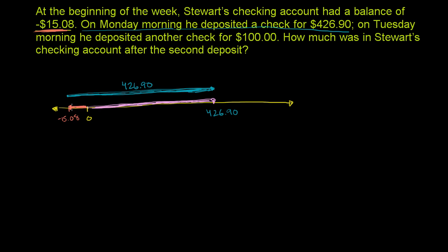The length of the orange arrow is just the absolute value — you can't have negative length — so it's just $15.08. That gives us $426.90 minus $15.08. Lining up the decimal points: 10 minus 8 is 2, 8 minus 0 is 8, 6 minus 5 is 1, 2 minus 1 is 1, and 4 minus nothing is 4. So we get $411.82 — that's how much he had after Monday.